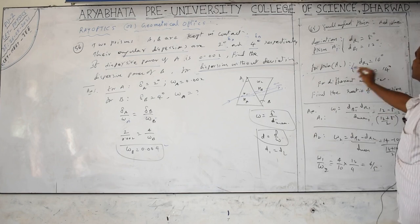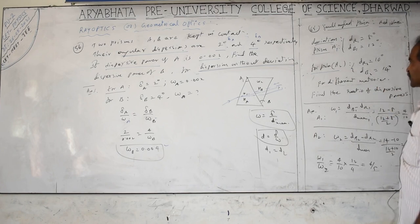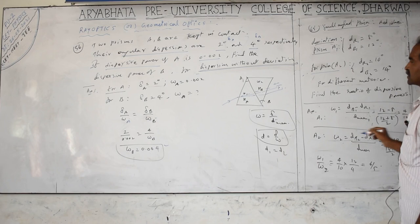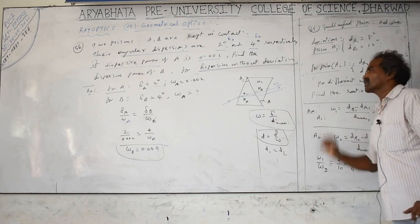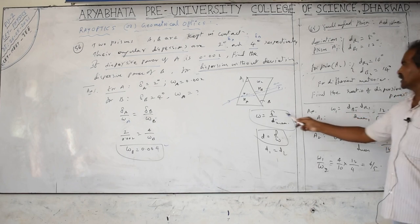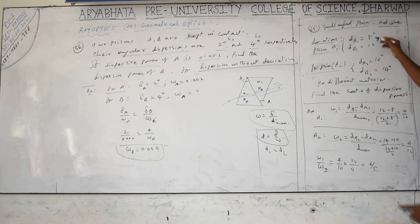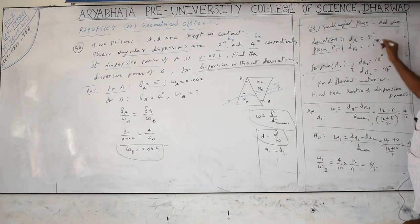For the second prism, red deviation is 10 and blue is 14. Different materials means omega is different. Find the ratio of dispersive powers. The formula for dispersive power is omega equals delta divided by mean deviation. For the first prism: delta = 12 minus 8 = 4 degrees. Mean deviation = (8 + 12) / 2 = 10 degrees. So omega_1 = 4 by 10 = 2 by 5, or 0.4.